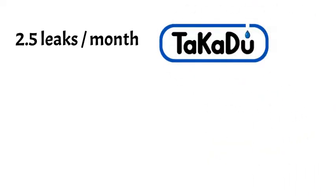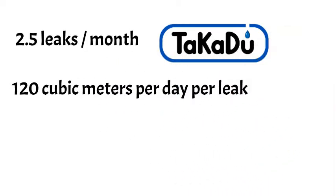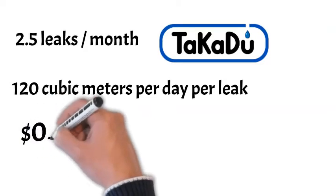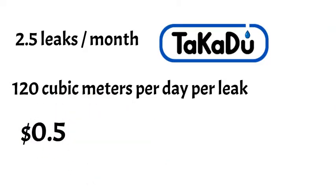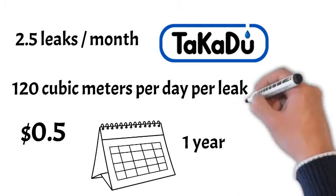it's reasonable to project an average of 2.5 leaks per month that only Takadu detects, with an average size of 120 cubic meters per day per leak. The water cost in this example is 50 cents per cubic meter. Market experience shows that it takes hidden leaks a year before they burst on the surface.